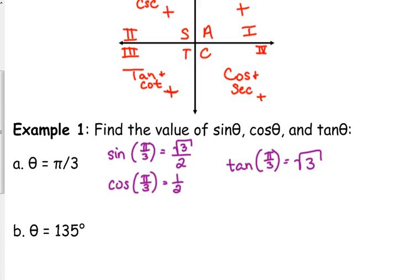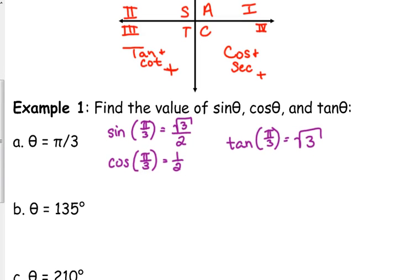I'm going to use reference angles — reference angles are coming back into play. First of all, tell me what quadrant 135 degrees is in. Second quadrant. It is in the second quadrant. It has a reference angle of 45 degrees. It's either going to be 30, 45, or 60.